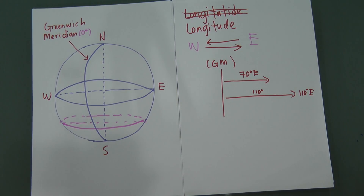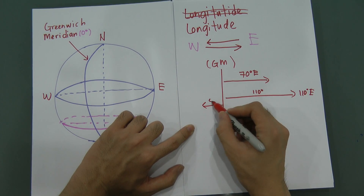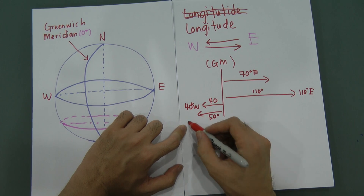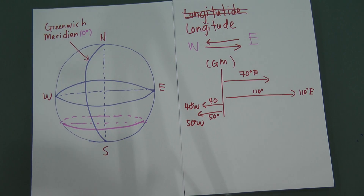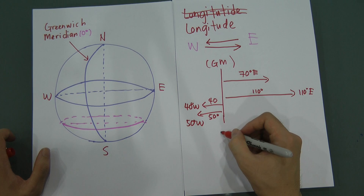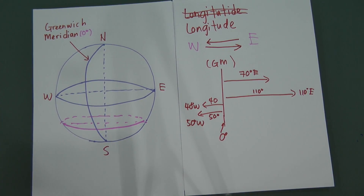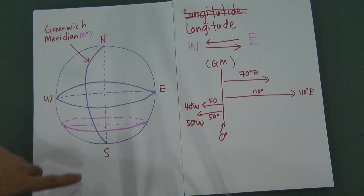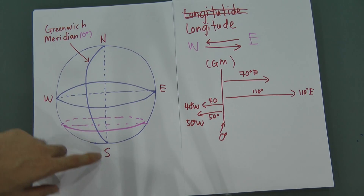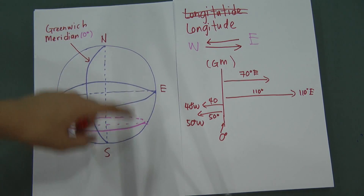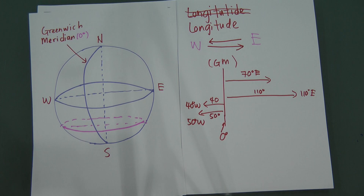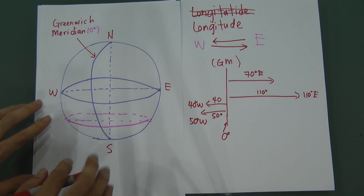If you move 110 degrees to the east side, we call it 110E. Same thing — if you move 40 degrees to the west side, we call it 40 West. If you move 50 degrees to the west side, we call it 50 West. The Greenwich Meridian always starts at zero. In your exam, it will usually just be written as zero.